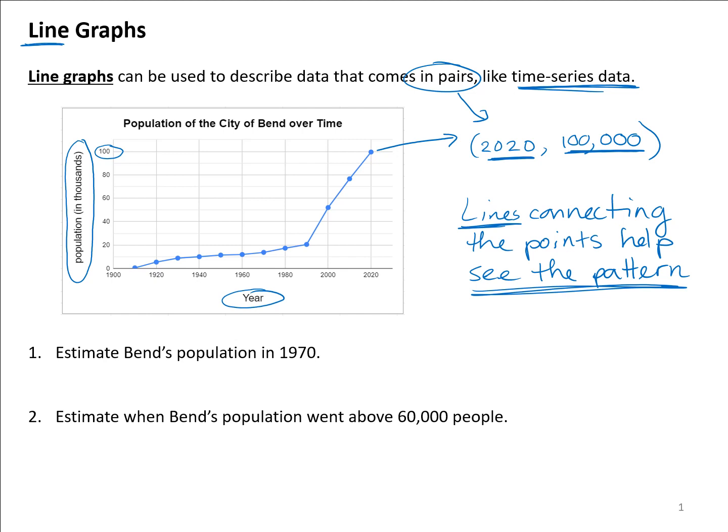For instance, if we wanted to estimate Bend's population in 1970, we would go to where 1970 is. Remember the year is on the horizontal axis, so 1970 would be halfway between 1960 and 1980. You don't always have exactly the year that you're working with on the axis, but you can very easily approximate that it's halfway there, and we do have a data point related to that. If we wanted to know the population, we're going to look at where that data point is in terms of going across to the vertical axis.